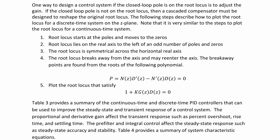Table 3 provides a summary of the continuous time and discrete time PID controllers that can be used to improve the steady state and transient response of a control system. The proportional and derivative gain affect the transient response, such as percent overshoot, rise time, and settling time. The pre-filter and integral control affect the steady state response, such as steady state accuracy and stability.